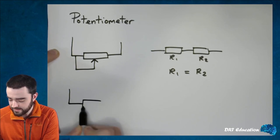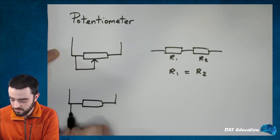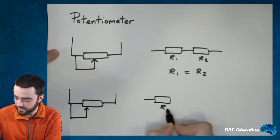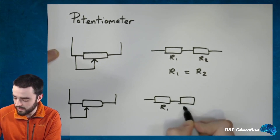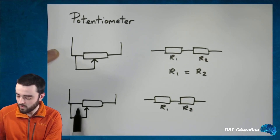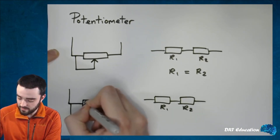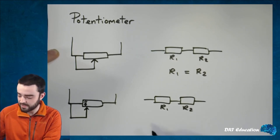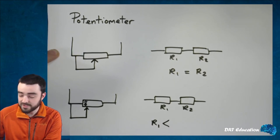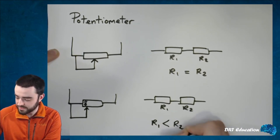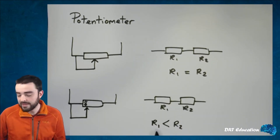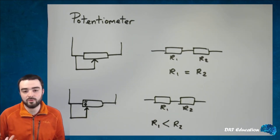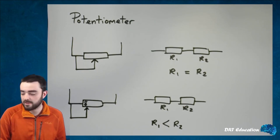If we instead set it up off-center, that would be like saying we have R1 and R2 where R1 is just a small proportion of that coiled resistor wire, making R1 far smaller than R2. That means R1, if we hooked up a voltmeter across it, would have a smaller proportion of the voltage than R2.